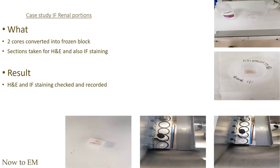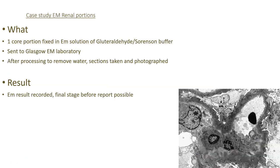The final stage was the electron microscopy. One core portion was fixed in an EM solution of glutaraldehyde in Sorensen's buffer and sent to the electron microscopy laboratory in Glasgow. There it was processed, water was removed, and sections were taken and photographed after embedding in epon resin. The resulting black and white image shows the interior of the glomerulus.